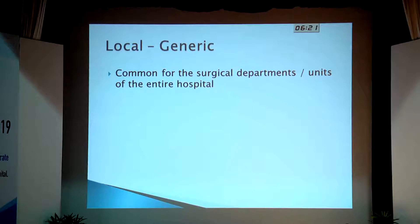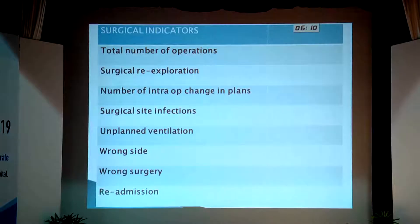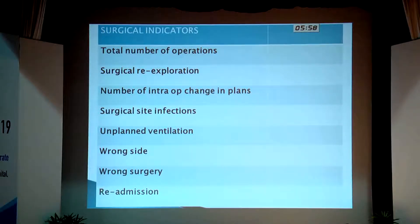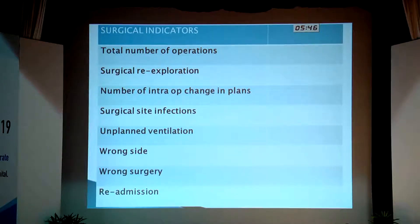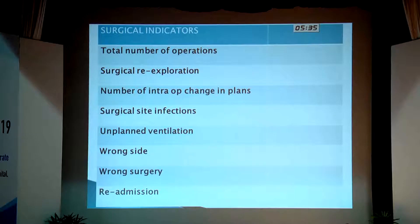Now we come to local problems that are common to surgical departments or units of the hospital — indicators that have to be measurable across the board in all surgical specialties. This is what we use in our institution, common for all surgical specialties. These indicators are very generic: the total number of operations, which looks at workload and experience, because we know that with increased volume you have increased quality. And there is a list of events we look at — surgical re-exploration rate, intraoperative change of plans, surgical site infections, unplanned ventilation, wrong site operations, wrong operation, readmission rate, and sentinel events that are recorded.